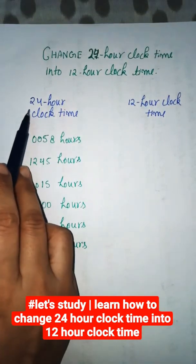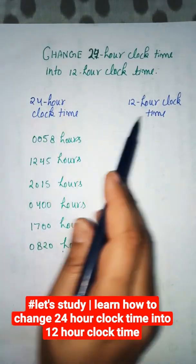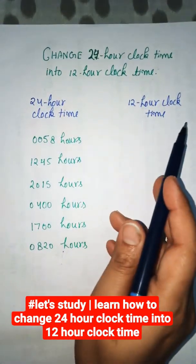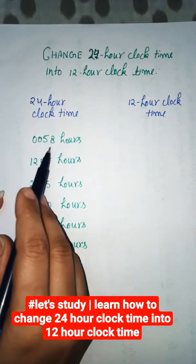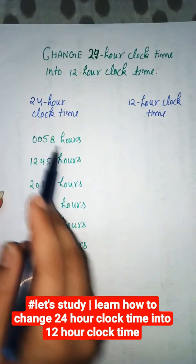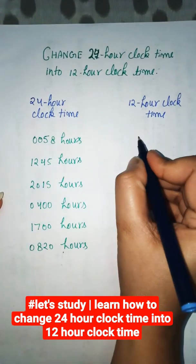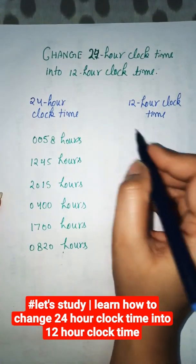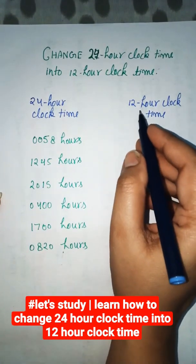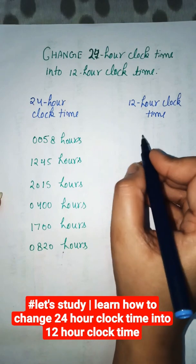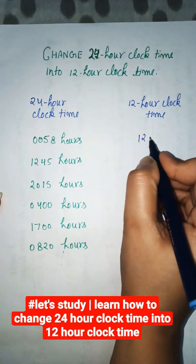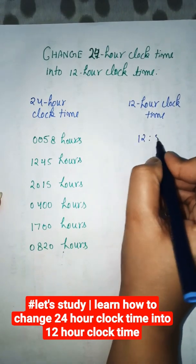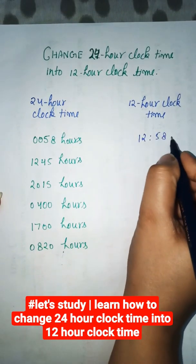To convert 24-hour clock time into 12-hour clock time: 0058 hours — we write this as 12:58 a.m.